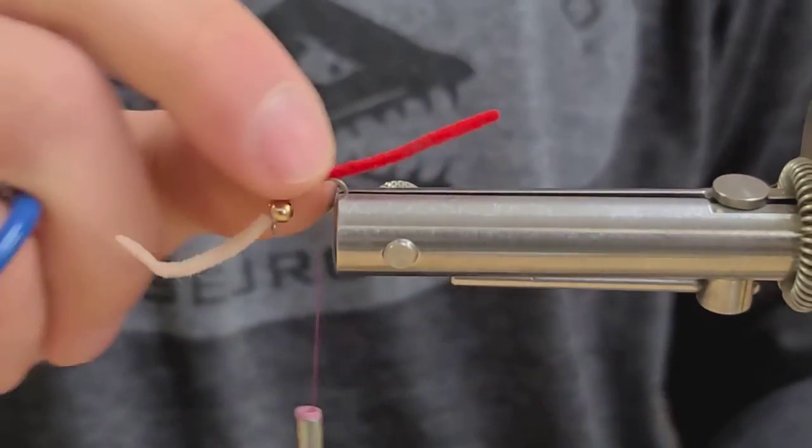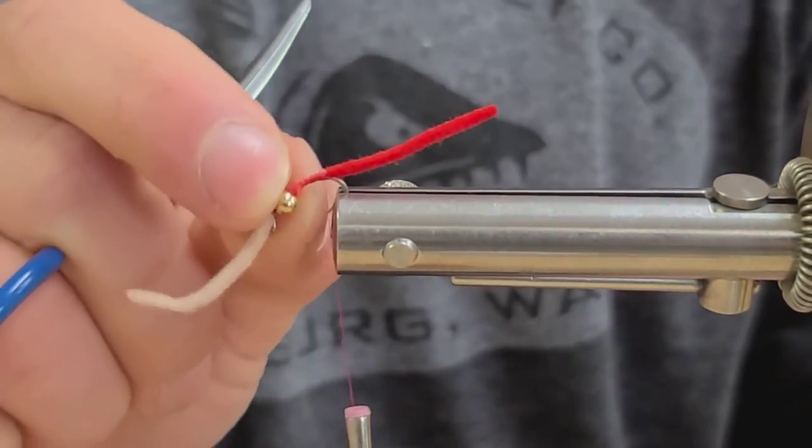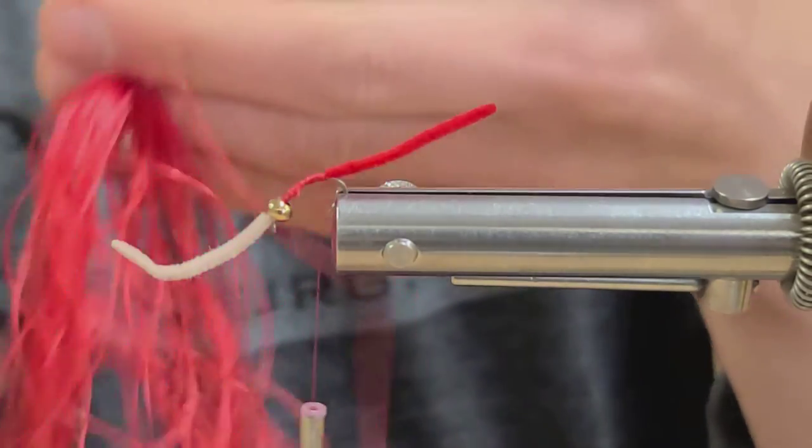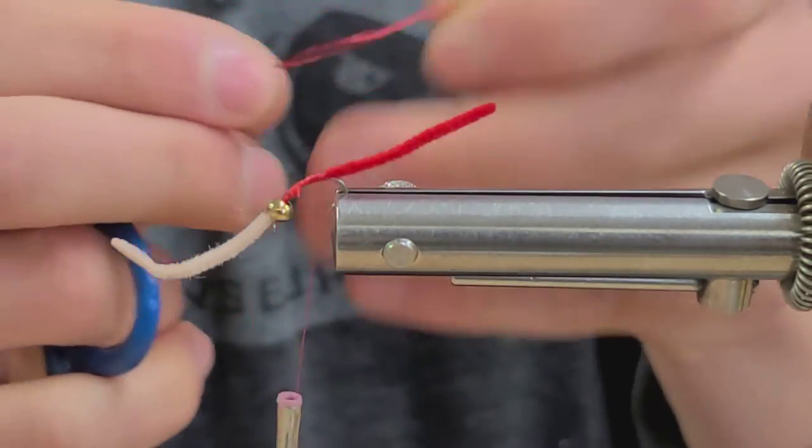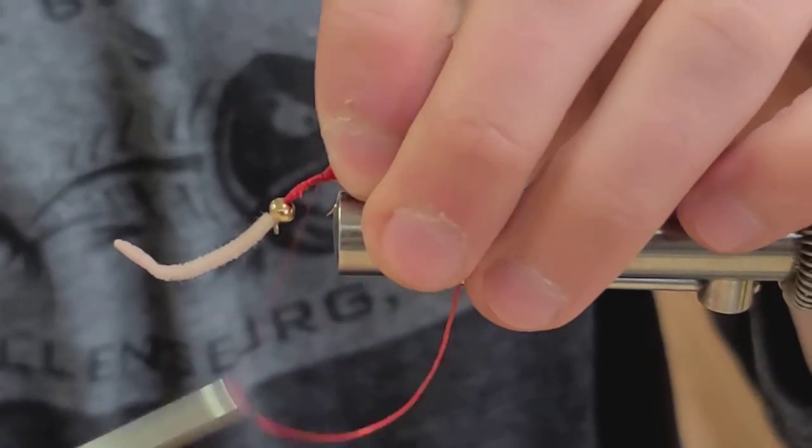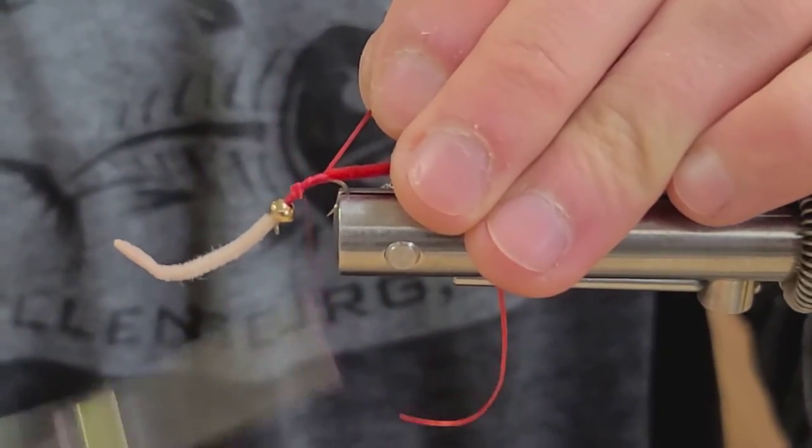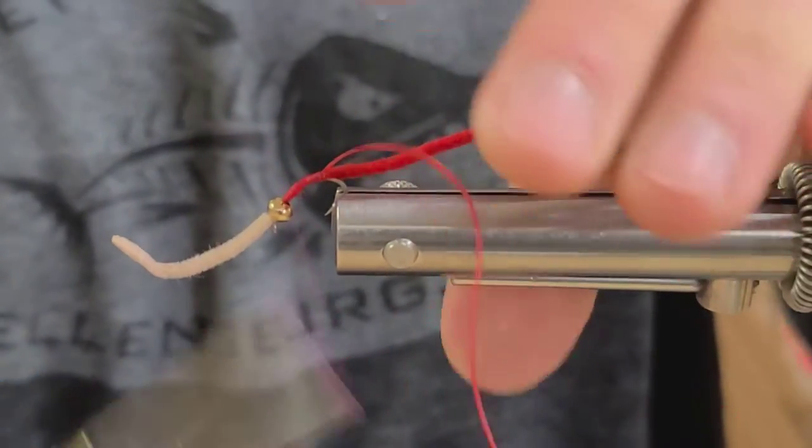So now you can either finish the body off with thread there all the way up and build it up so that bead doesn't slide, or I'm taking some red spandex here. And this adds a nice layer of protection as well, so it's really durable. Let's tie that down in line, follow the taper there.